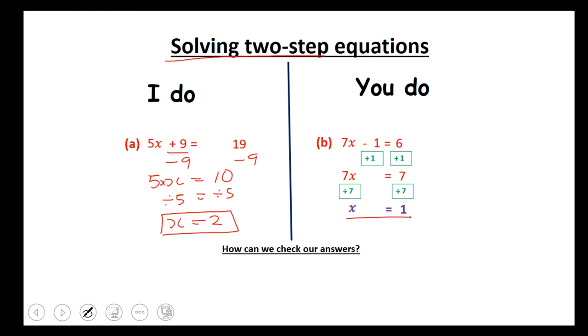So for this one we got x equals 1. 7 times 1 is 7. Subtract 1 and you get 6. So we are correct.